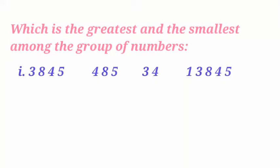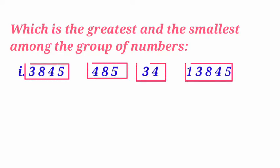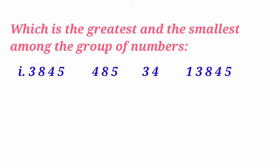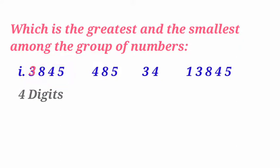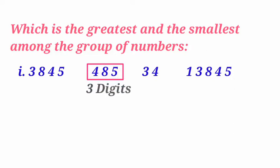Look at the first problem. This problem has four numbers. If we observe, these four numbers consist of a different number of digits. The first number consists of four digits: three, eight, four, and five. The second number consists of three digits.